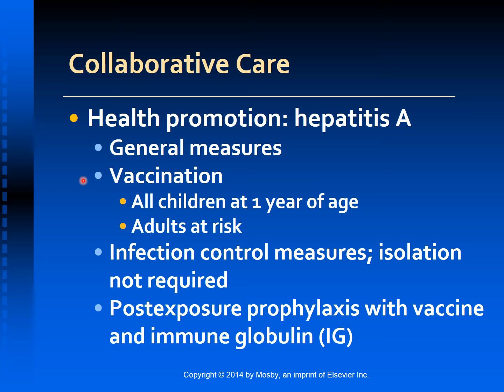Adults at risk should also receive the vaccine. These include people who travel to areas with increased rates of hepatitis A, men who have sex with men especially anal intercourse, users of injection and non-injection drugs, persons with clotting factor disorders such as hemophilia, and persons with chronic liver disease.